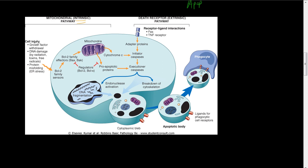When there is cell injury — such as growth factor withdrawal, where growth factor is constantly being applied to a cell and for some reason that is withdrawn — the cell will initiate this intrinsic mitochondrial apoptosis pathway. If the DNA is damaged, or if there is protein misfolding, as we talked about, the pathway is also triggered.